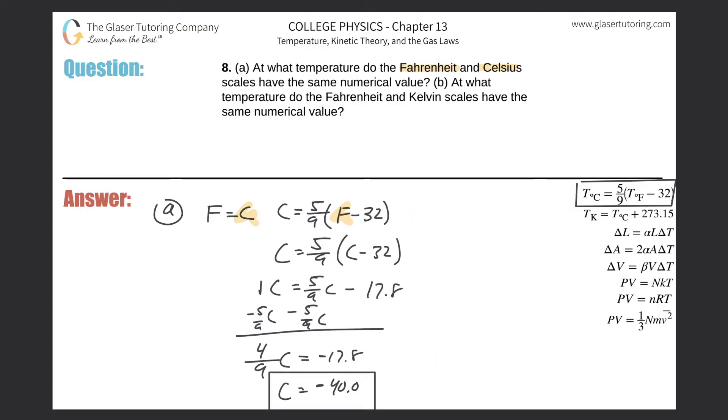Okay? We'll just move this over a little bit, just creating a little more space. Now, moving on to letter B, what is it asking? It says, at what temperature do the Fahrenheit and Kelvin scales have the same numerical value? So again, we're going to approach this the same way. F has to equal K. The problem, though, is that we don't have a formula now that relates these two variables to one another. So let's go hunting for one.